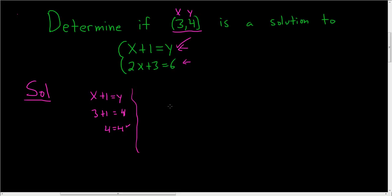Now we'll check the second equation. So let's see, we have 2x plus 3 equals 6. So there's no y to plug in here, so all we do is plug in the x.